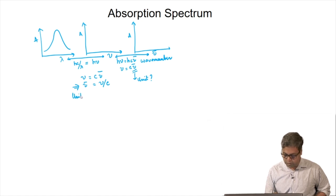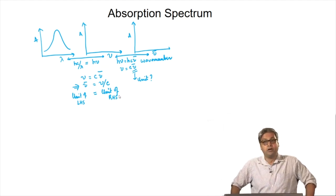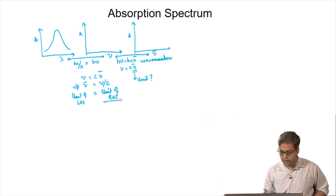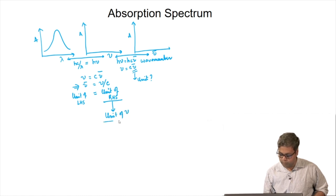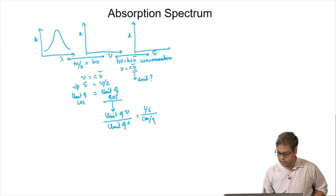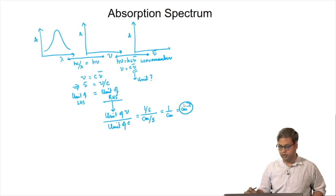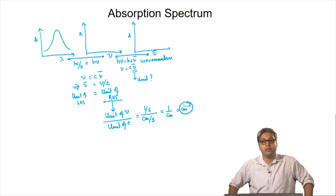The unit of the left-hand side equals the unit of the right-hand side. To find the unit of nu bar, we find the unit of the right-hand side, which is the unit of nu divided by the unit of C — that is, 1/second divided by centimeter per second. This gives 1 by centimeter, or centimeter inverse. So centimeter inverse is the unit of nu bar.